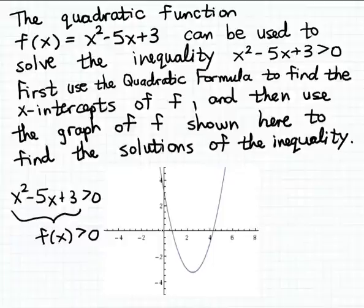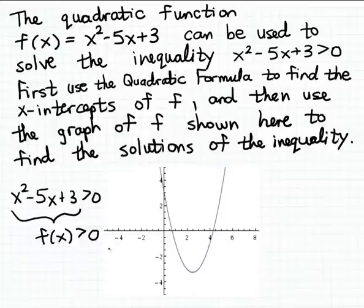That's because it's for this portion of the x-axis — outside of the x-intercepts — that the graph of the function f is above the x-axis, meaning the matching outputs from the function f are going to be greater than 0. So to determine this solution set exactly, I need to find the exact values for these two x-intercepts for the function f.